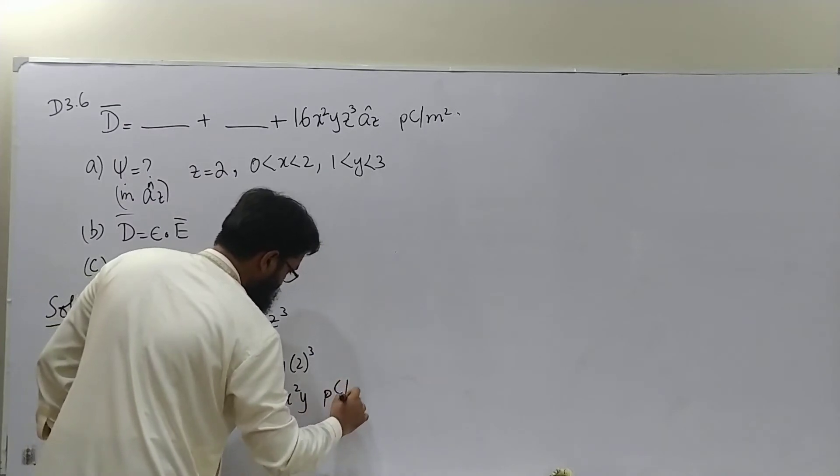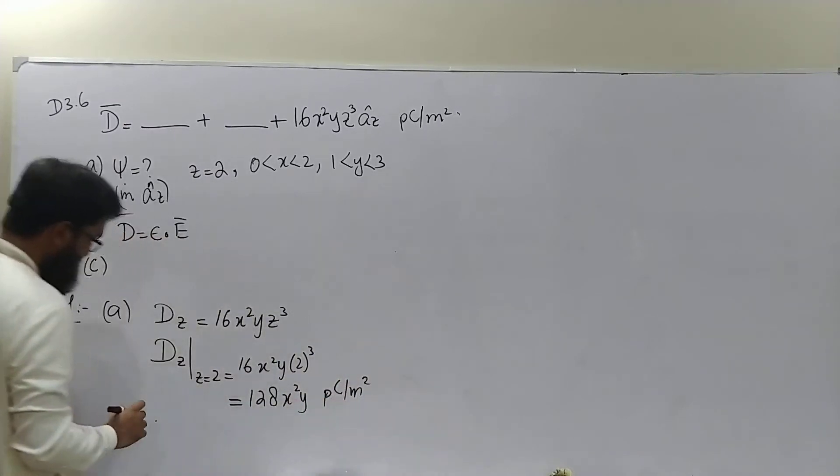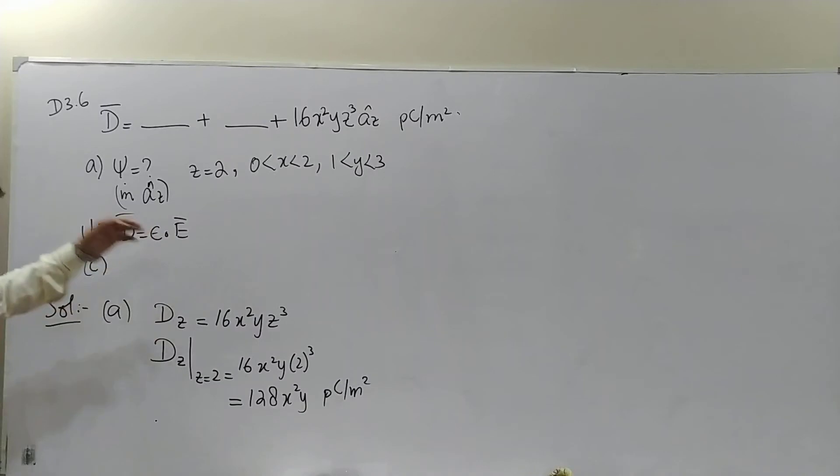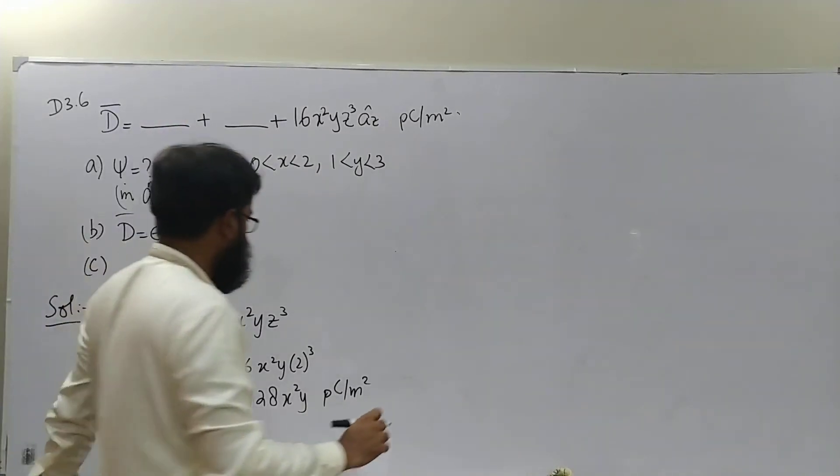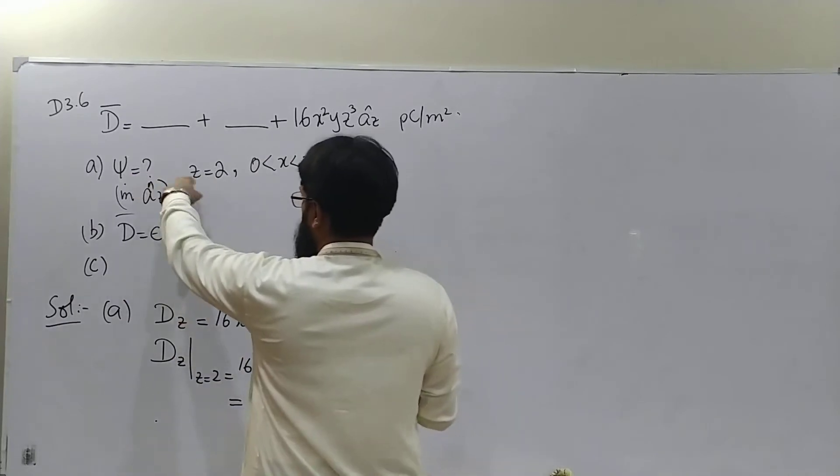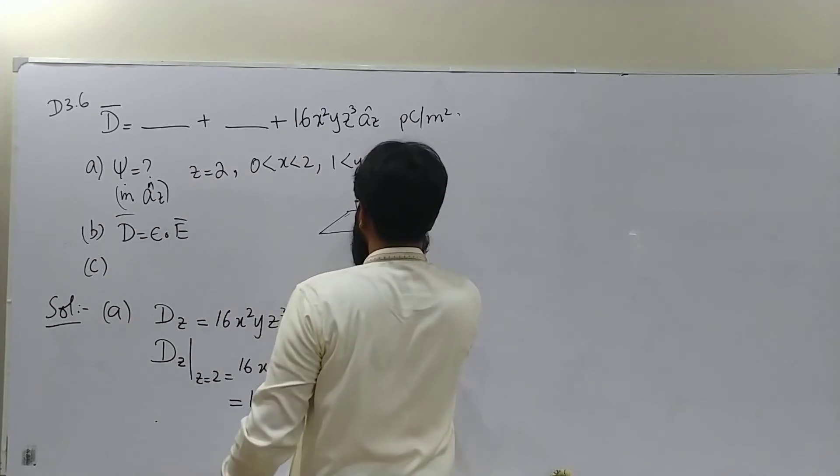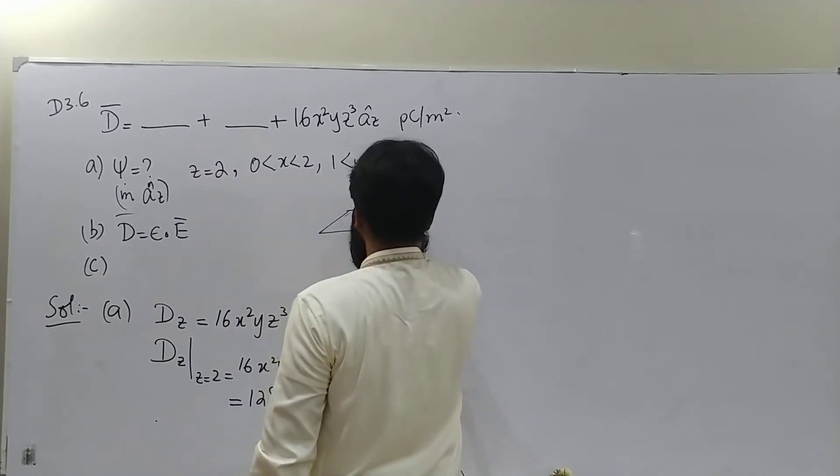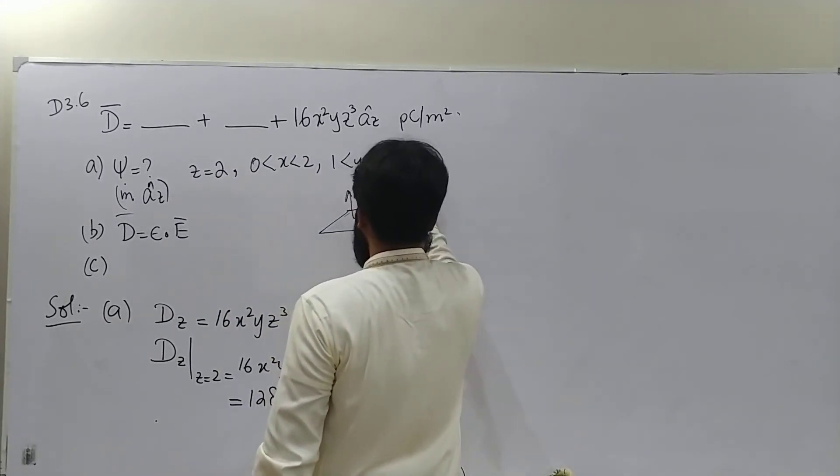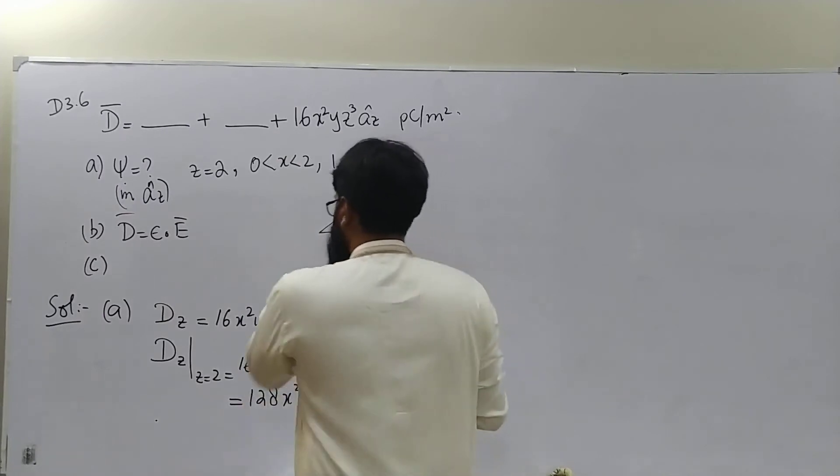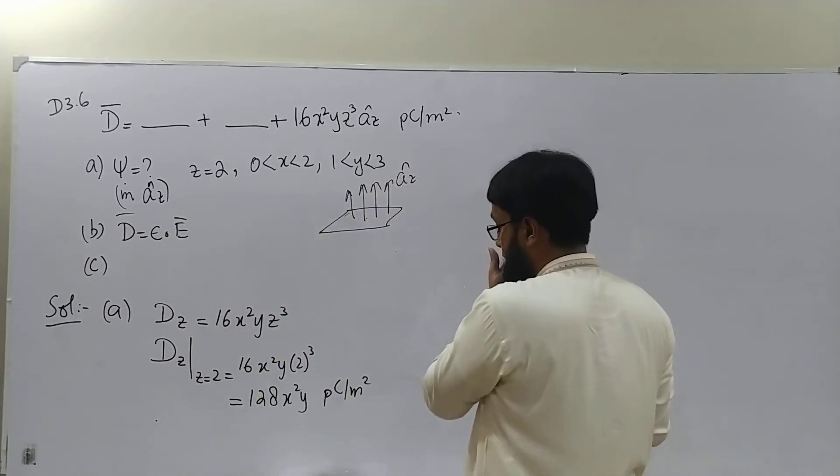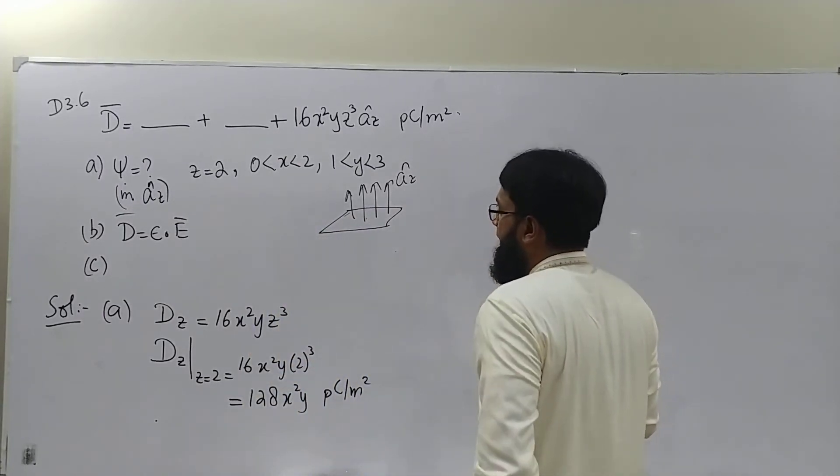Our picocoulombs per meter square. So this is the magnitude of flux density in the direction az. So definitely you know that this is a horizontal plane z equals to zero and we need the flux which is in az direction considering our usual orientation of the axis.